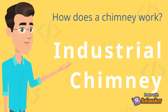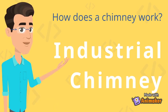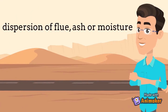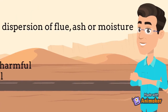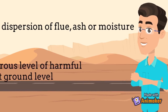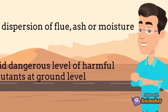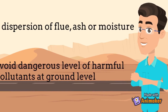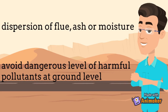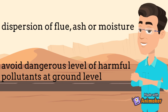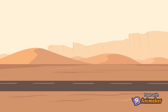How does a chimney work, specifically industrial chimneys? A chimney is an equipment that is used to create natural draft for dispersion of flue gases, moisture, or ash.